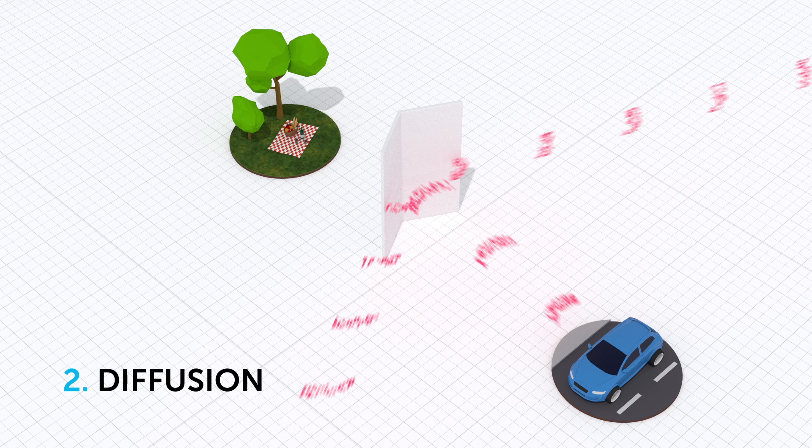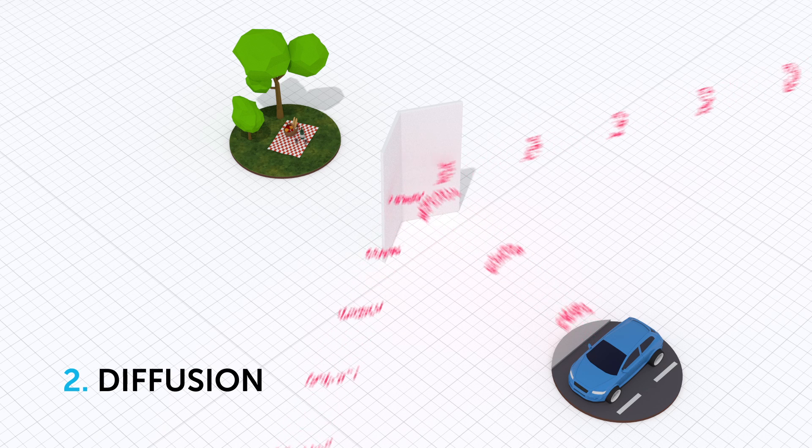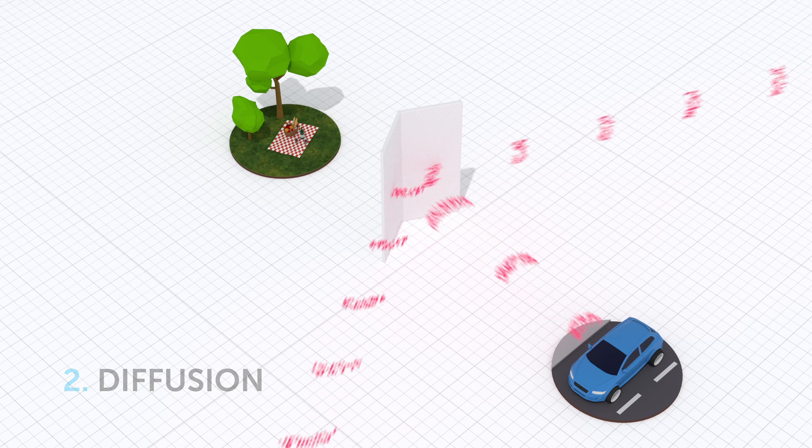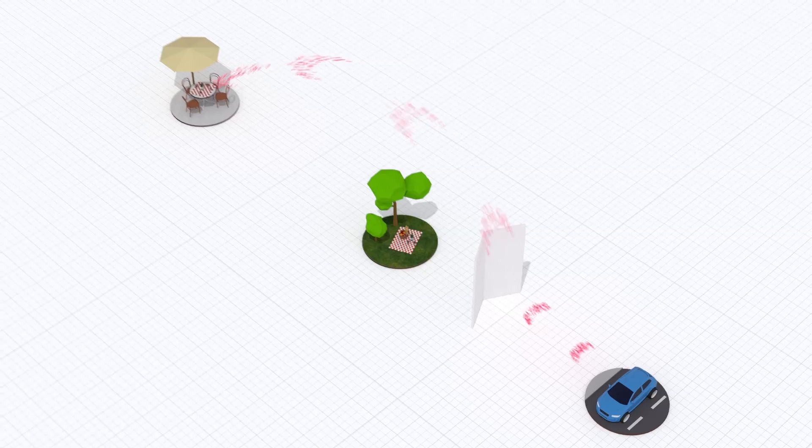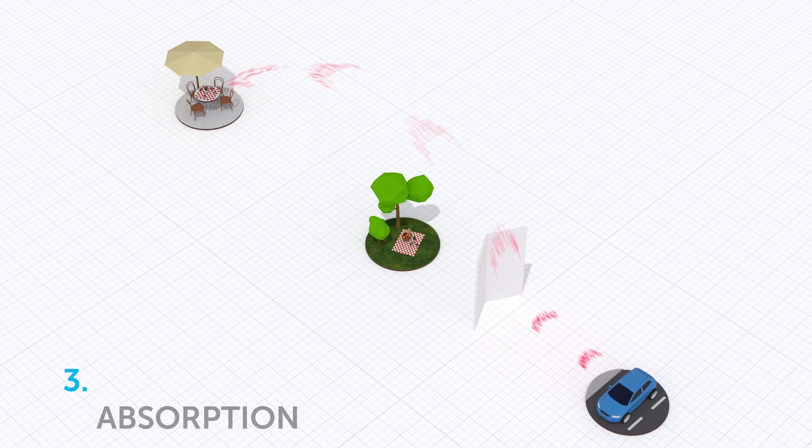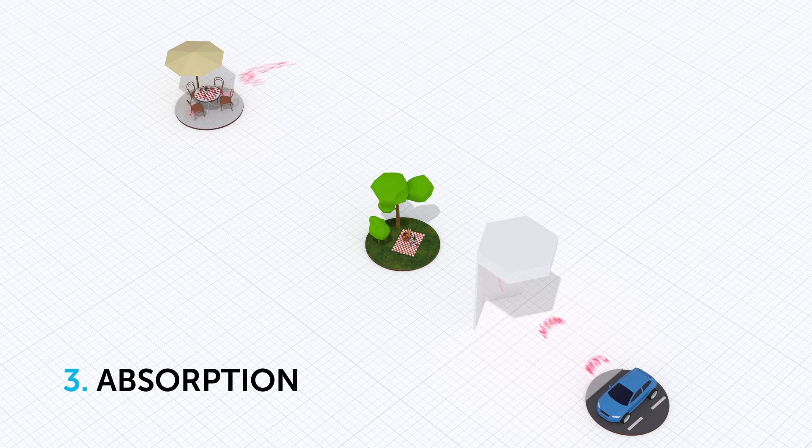When building walls, the noise is stopped from going straight through, but is also being catapulted above the wall, causing it to pollute somewhere else. To fix this, we use the third principle, absorption, to dampen the sound traveling upwards.